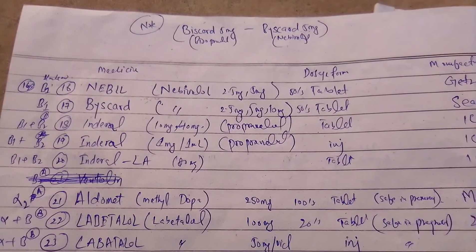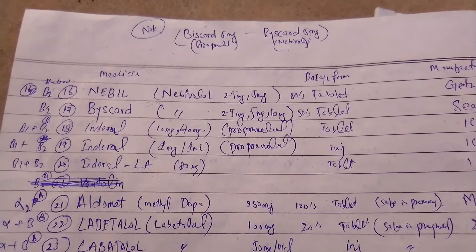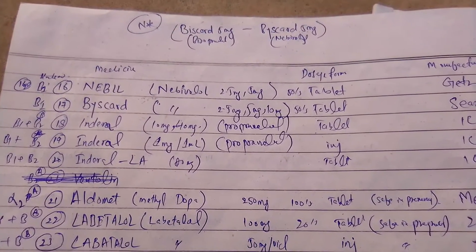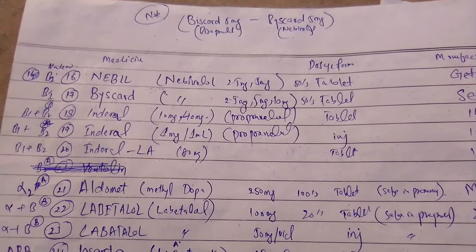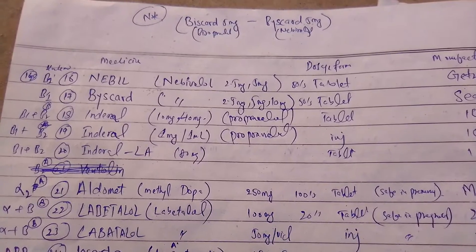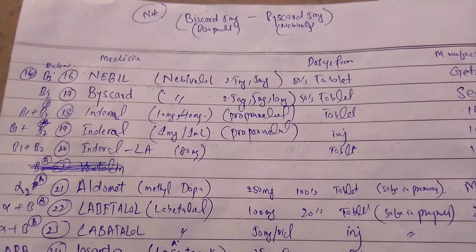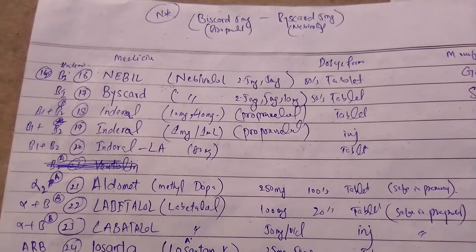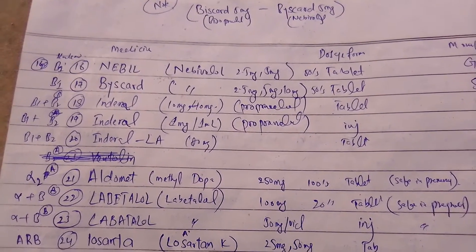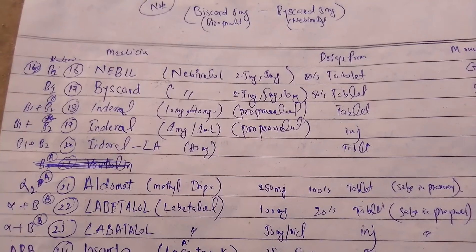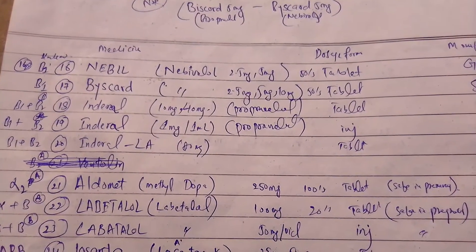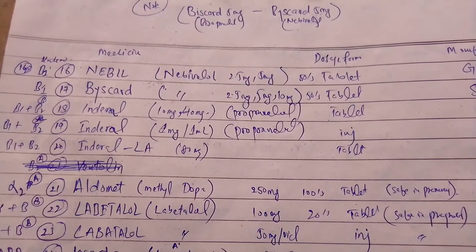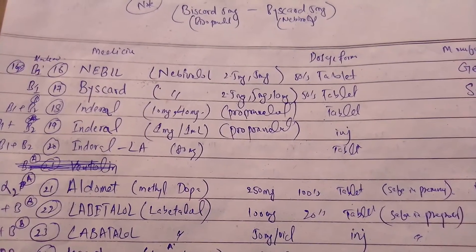This card shows nebivolol available in 2.5 mg, 5 mg, and 10 mg tablets. Raw is another medicine available in 10 mg and 14 mg tablets, with the generic name propranolol. It is a beta-1 and beta-2 blocker — a non-selective beta blocker. Raw is also available as an injection, 1 mg per 1 ml.